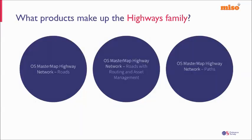There are three products that make up the Highways family. First, there's the Roads data, equivalent to the ITN road centre line, with streets data from the local authority gazetteers and the Highways England gazetteer. Then we have Roads with Routing and Asset Management — note you don't need to order both, as it's the same data with added routing information: where you can and cannot drive, plus asset management telling you which local authority to inform if you're digging up a street and how to reinstate the road surface. Finally, there's the Path information — interconnecting footpaths within the urban area.